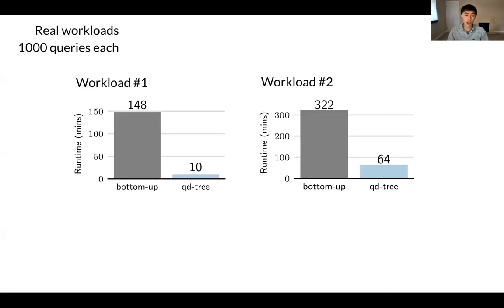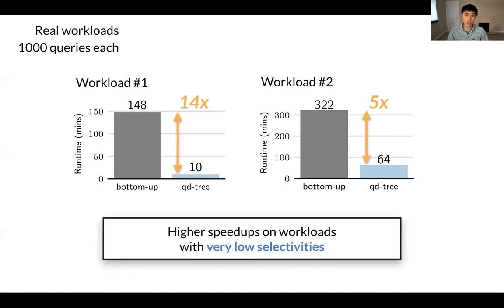We also evaluate on two real workloads from an internet company. In this case, we see an even bigger speedup from 5 times to 14 times. The reason is because these workloads have lower selectivities than the TPC-H workload, and QD-tree is able to quickly capitalize and identify the low selectivity cuts.